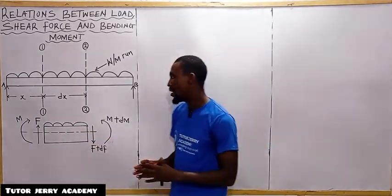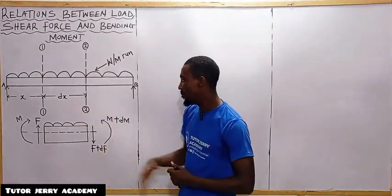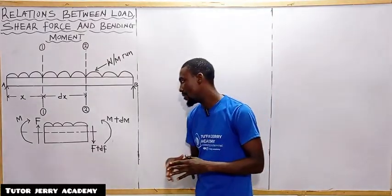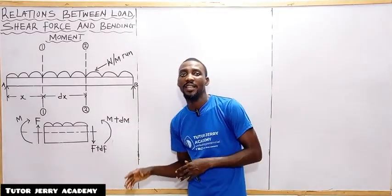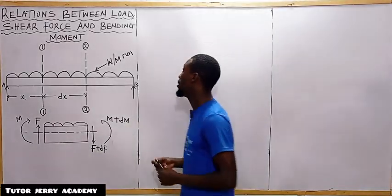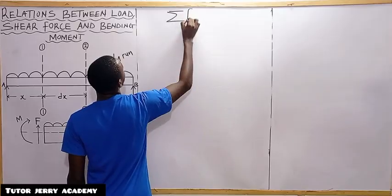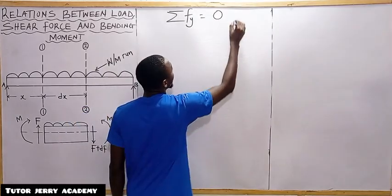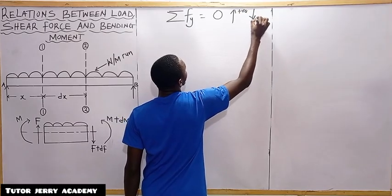Here we have the shear force F at section 1, and M is the bending moment at section 1. F plus dF is the shear force at section 2, and M plus dM is the bending moment at section 2. To solve this, the first thing we consider is the summation of forces in the y-direction equals zero, taking upward forces as positive and downward forces as negative.